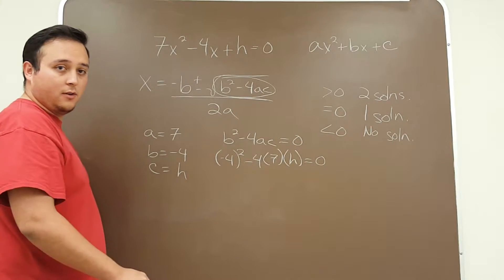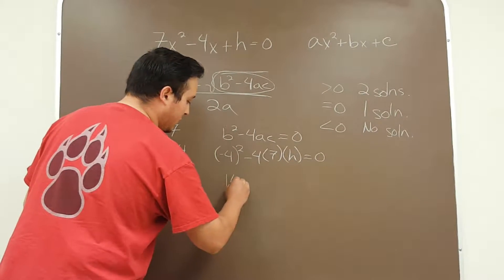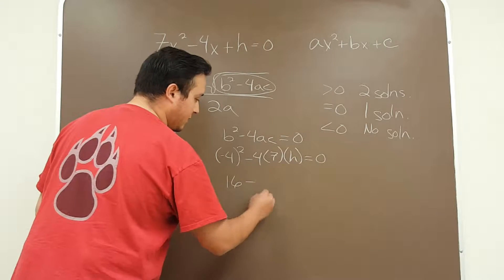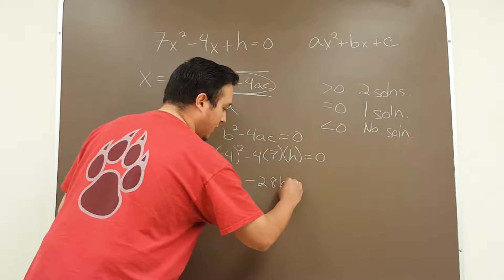Following PEMDAS or order of operations, we'll solve for h. 16 minus 28h is equal to 0.